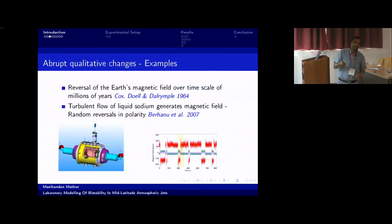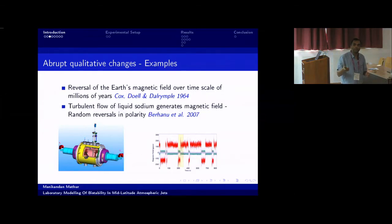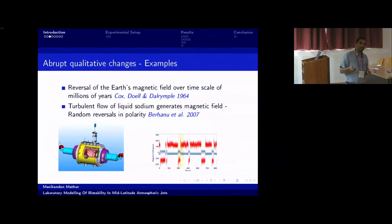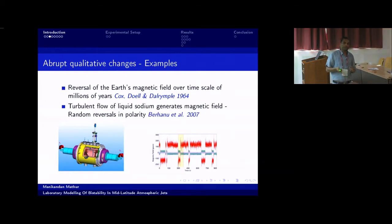I included this slide to put things in context of what's already been spoken about. The Earth's magnetic field is known to reverse in its polarity over time scales of a million years, understood to be a result of turbulent flow of an electrically conducting fluid in the Earth's core — or as in this experiment, turbulent flow of liquid sodium. What's plotted is the magnetic field spontaneously generated as a result of this turbulent flow. You see times when the polarity switches, and the times over which the polarity remains steady are always much longer than the time scale of the switch itself. It's such a phenomenon — abrupt transitions between two persistent states — that I'm interested in, but with respect to atmospheric jets.